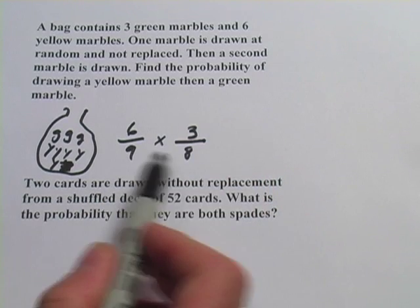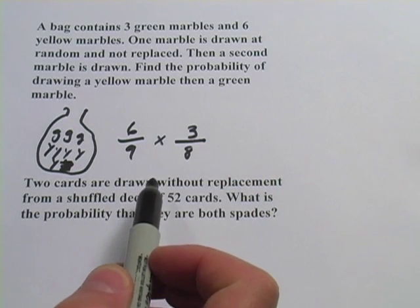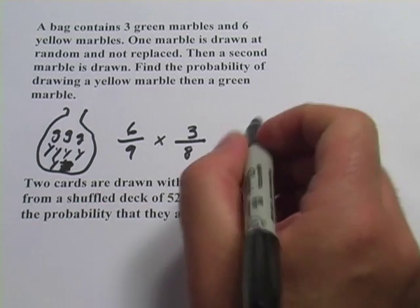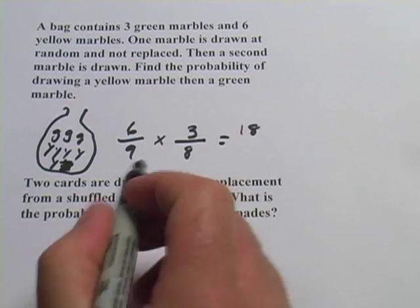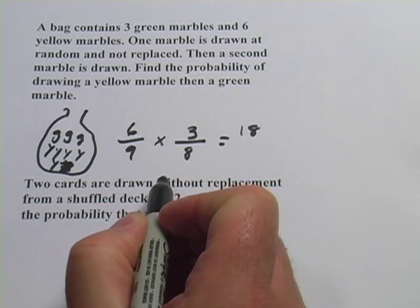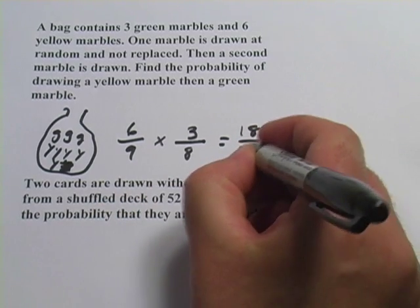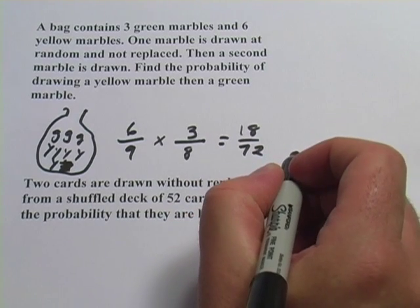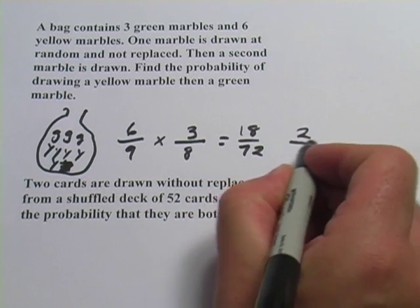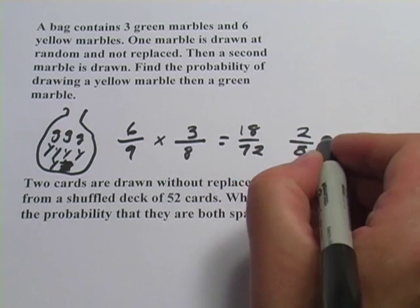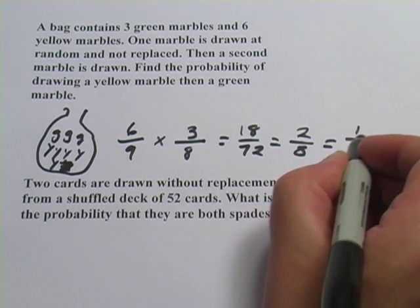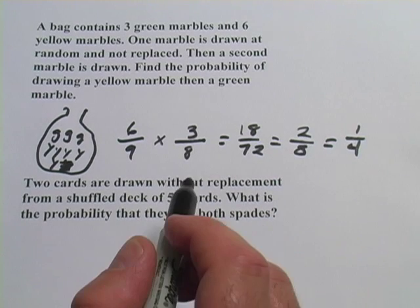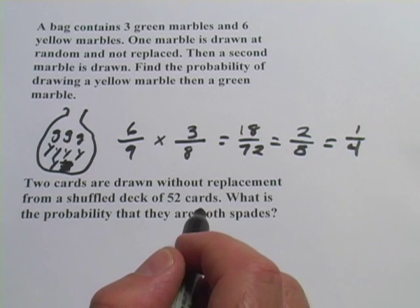Then, to see what the probability of both these events happening, one after another, you multiply them together. Multiply across the top, 6 times 3 is 18. 9 times 8 is 72. And then you'd want to reduce this. I think you can take a 9 out of both of them. So that would be 2/8, and that would be 1/4. So there's actually a 1 in 4 chance that you would pull a yellow marble and then a green marble.